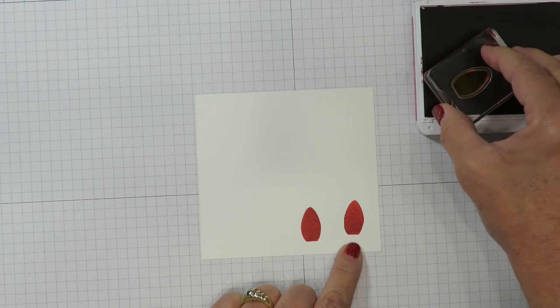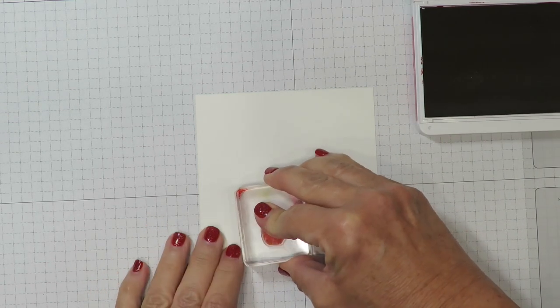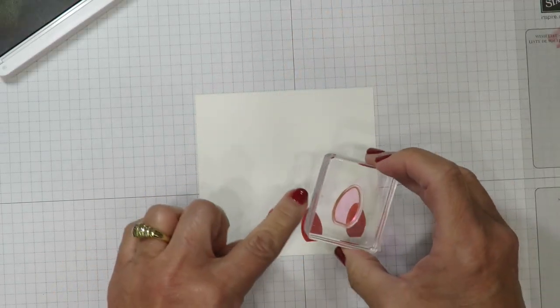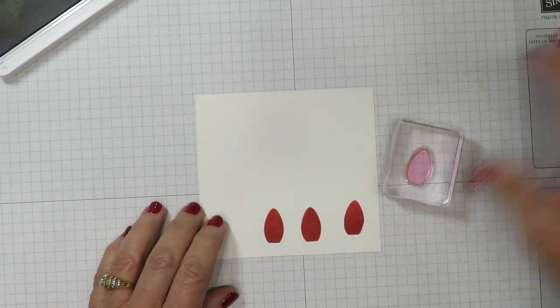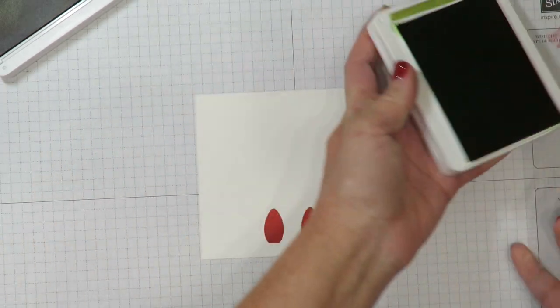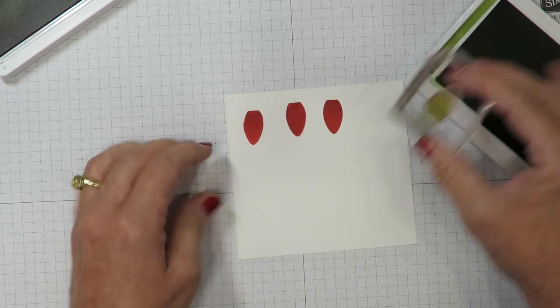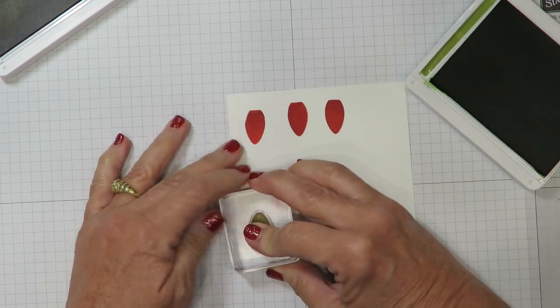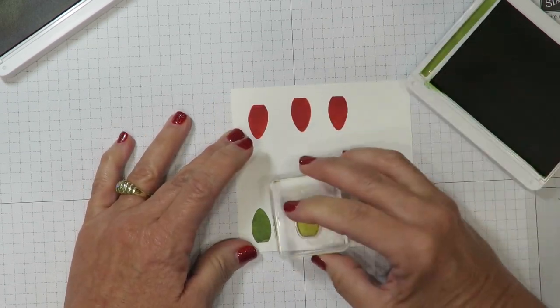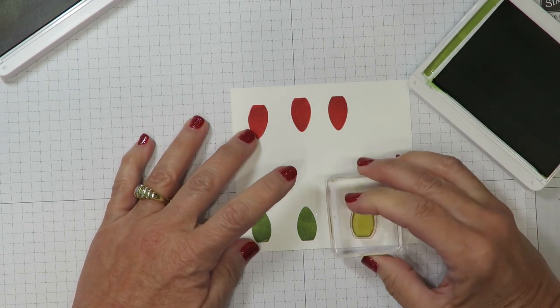Well that one didn't come out very good now that I'm looking at it, so let's re-stamp that. That's the great thing about using scrap cardstock. I've cleaned my stamp right off camera on my Stampin' Chamois and I'm going to bring in now the Old Olive ink. I'm going to do the same thing. I'm going to stamp three of these. So I've got one here and another, and I'm leaving a little bit of space just to compensate for the punch.